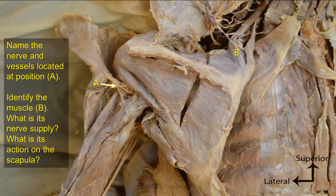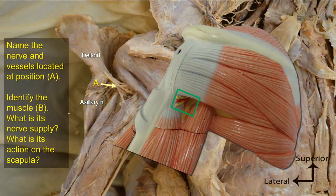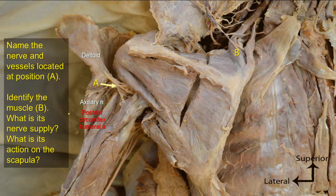Name the nerve and vessels at position A. The neurovascular bundle A represents the axillary nerve winding around the surgical neck of the humerus, deep to the deltoid muscle, which has been dissected and reflected. The axillary nerve leaves the axilla through the quadrangular space and is accompanied by the posterior circumflex humeral vessels. The posterior circumflex humeral artery is a branch of the third part of the axillary artery.